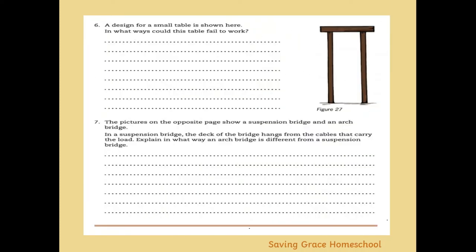Question six asks you to look at the diagram of a small table in figure 27 and discuss in what ways this table could fail. Look at the design — how tall it is versus how wide. It's a very tall table with supports relatively close together, so it could topple easily. Think about what would happen to these relatively thin legs if you put a heavy load on the table.